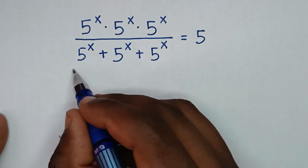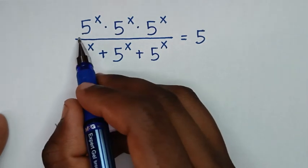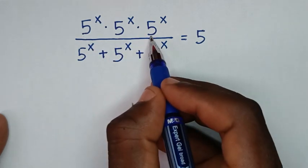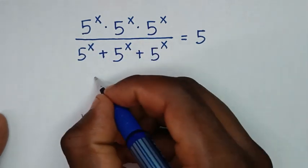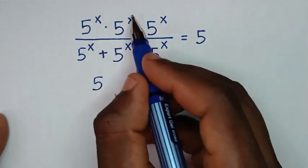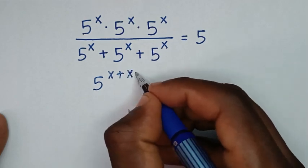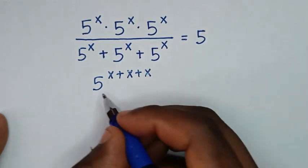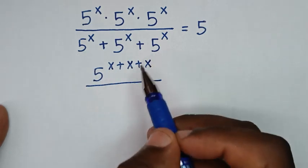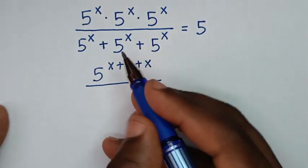To find the value of x from this equation. In the first step, from the numerator, 5 power of x times 5 power of x times 5 power of x — since they have the same base of 5, we add the powers, so it will be 5 power of x plus x plus x. Then in the denominator, we factorize because 5 power of x is common.